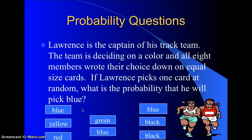Here's another question set up for you. Lawrence is the captain of his track team. The team has decided on a color, and all eight members wrote their choice down on equal-sized cards. If Lawrence picks one card at random, what is the probability that he will pick blue? Remember your total choices. Your fractions are always the same. Total choices, there are one, two, three, four, five, six, seven, eight total choices. So the denominator is eight.